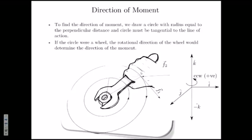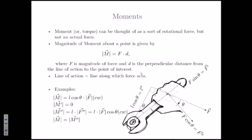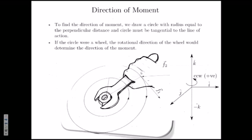The perpendicular distance is used to compute the distance between the line of action and the pivot point — you draw a line perpendicular from the pivot to the line of action. When you do the component method, you can use L instead because the component F cos theta is already perpendicular to L. So L is given to you — some geometric information has to be provided. For F1, the moment is negative because it causes clockwise rotation. Clockwise is negative, counterclockwise is positive — that's all you need to remember.